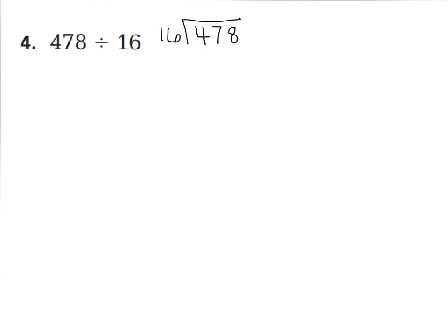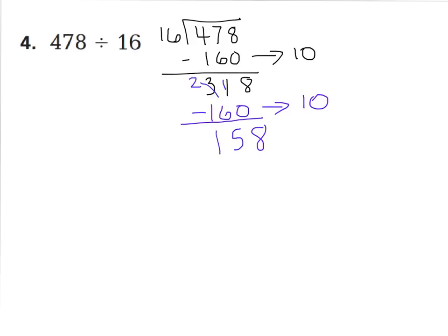I want to start subtracting groups of 16 that I can take away from 478. I know the easy one is groups of 10. So 16 times 10 would be 160. Let's play it safe and take away 160, which is 10 groups of 16. I still have 318 left. I can keep going. I don't want to take 16 away, that would take too long. But I do know I can still take away 160 from 318. So let's subtract again another group of 160 from 318, that's 10 more groups of 16. I have 158.